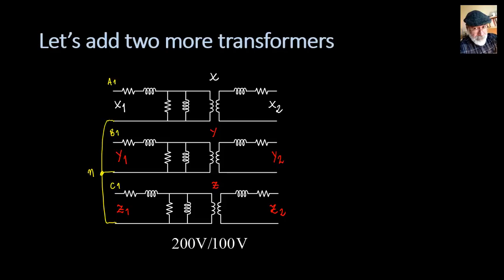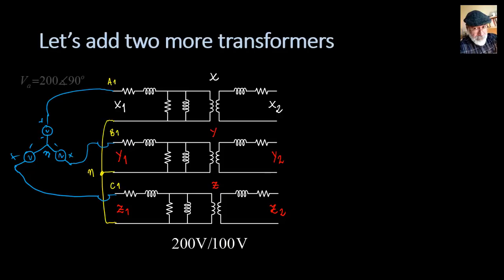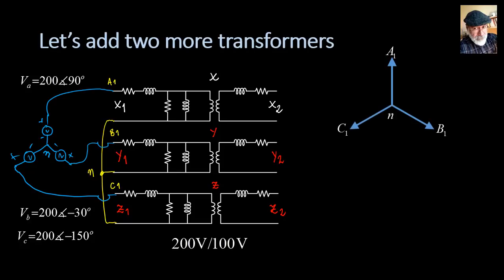Let me move that a bit to the right to make room for a source — a Y-connected three-phase symmetrical source with values of 200 volts at 90 degrees (the voltage of phase A to neutral in the primary), 200 at negative 30 degrees, and 200 at negative 150 degrees. Let's look at that graphically: neutral to A1, neutral to B1, and neutral to C1.